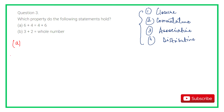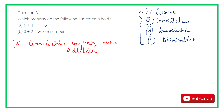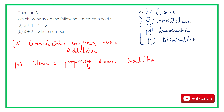Coming to the question: which property do the following statements hold? For 6 plus 4 equals 4 plus 6 — 6 plus 4 is 10, and 4 plus 6 is 10 — this is commutative property over addition. For part B: 3 plus 2 is a whole number — 3 plus 2 is 5, and 5 is a whole number — so this property is called closure property over addition.